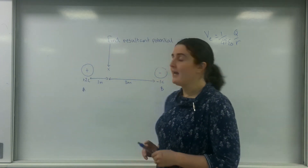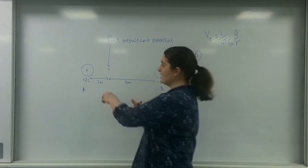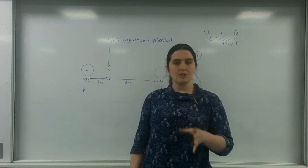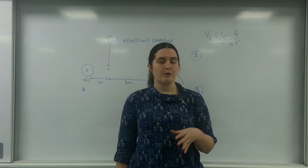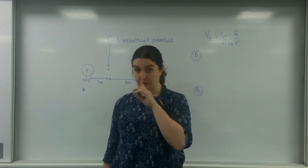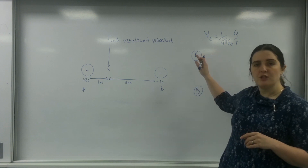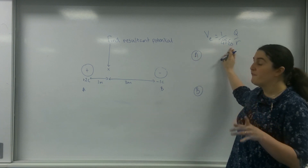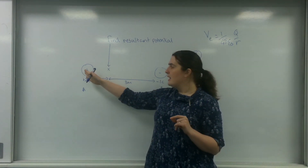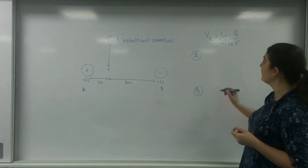What I have here is a plus 2 coulomb charge and a minus 1 coulomb charge, and I want to find the resultant potential at this point. This is important — it's not about energy, it's about energy per unit charge, so I'm only interested in the fields themselves. I'm going to use the potential formula to find the potential of the fields at their individual points, starting with the 2 coulomb charge.